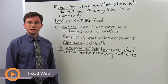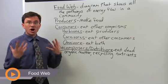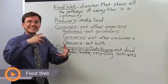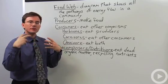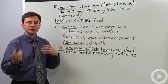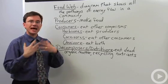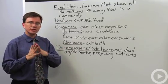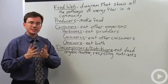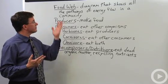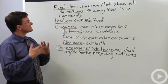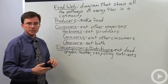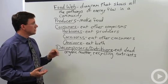When studying a particular ecosystem, ecologists like to learn who is eating who — where are all the connections between the different organisms, and how are they passing on the energy? To do that, you need to go beyond the simple food chain into what's known as a food web, a diagram that shows all the pathways of energy flow within a particular community.